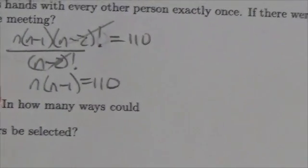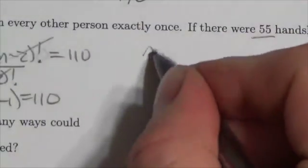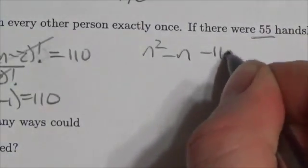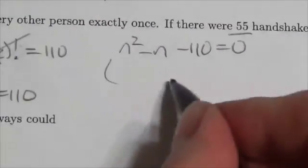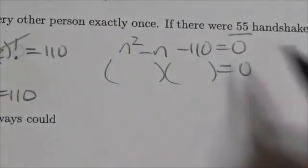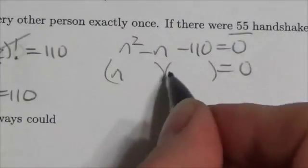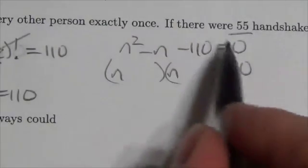Now if that's not clear to you right now, you could always just multiply that out and get n squared minus n, and then bring the 110 over, set that equal to 0, because it's a quadratic. But you're going to have to answer that same question—you're still going to have to answer the question: what are the factors of 110 that differ by 1?